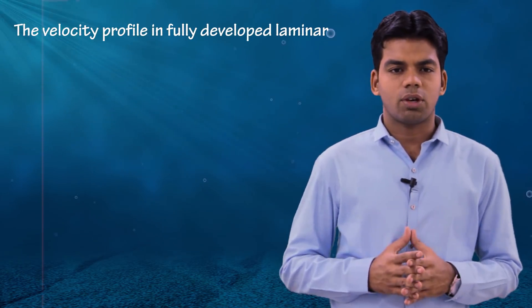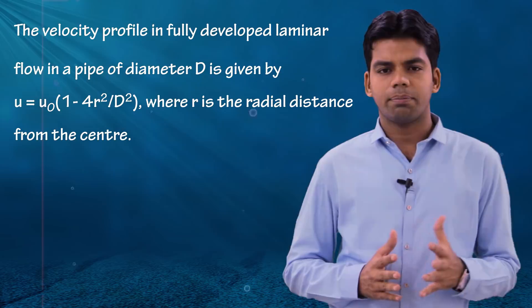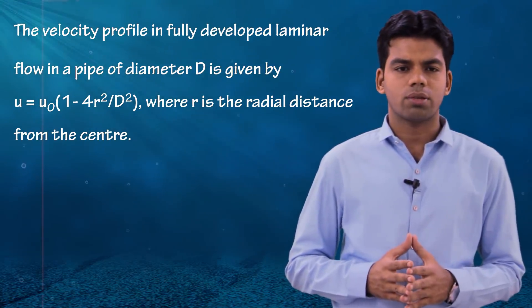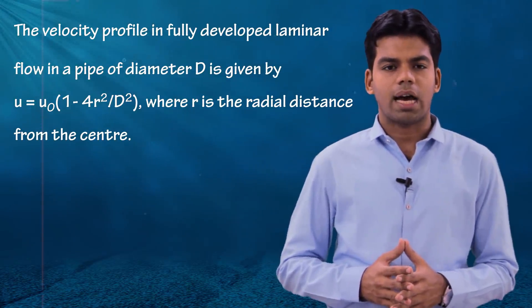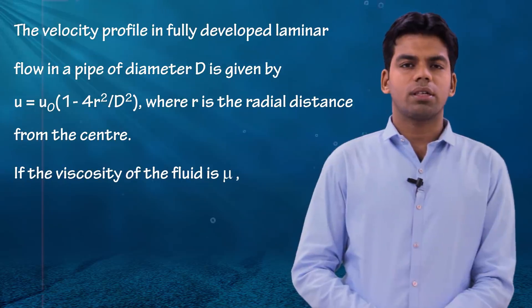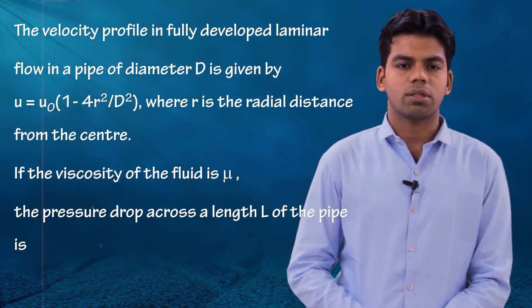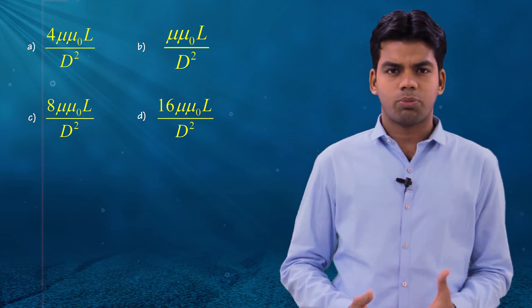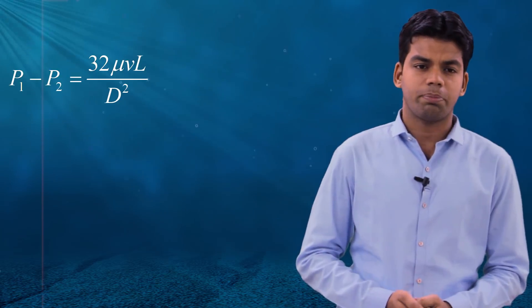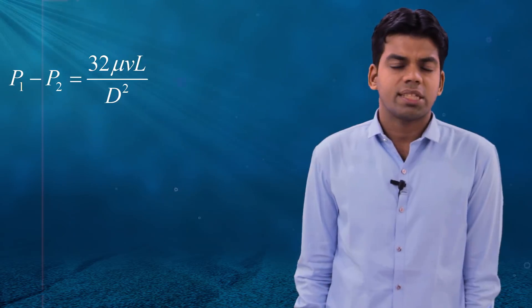Let's solve one more question from GATE 2006 Mechanical. The velocity profile in a fully developed laminar flow in a pipe of diameter d is given by u = u₀(1 − 4r²/d²), where r is the radial distance from the centre and μ is the viscosity. We need to find the pressure drop across a length of the pipe. Using the Hagen-Poiseuille formula: P₁ − P₂ = 32μVL/d². The main challenge is to determine V_mean.